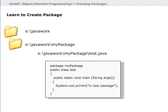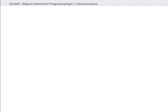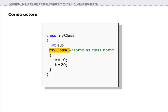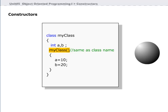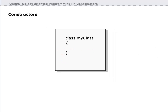A constructor is a special method you can create when defining a class. A constructor is used to initialize objects when they are created. If you do not specify a constructor in a class, Java creates a default constructor for that class. It is important to remember that the class name and constructor name must be the same.